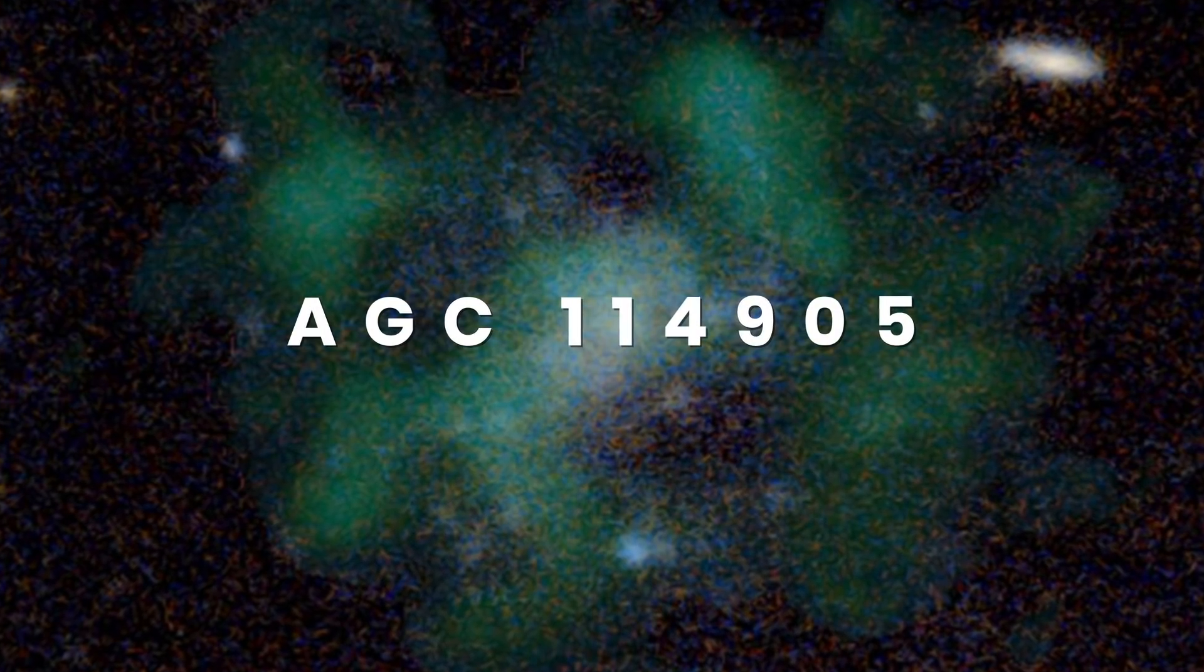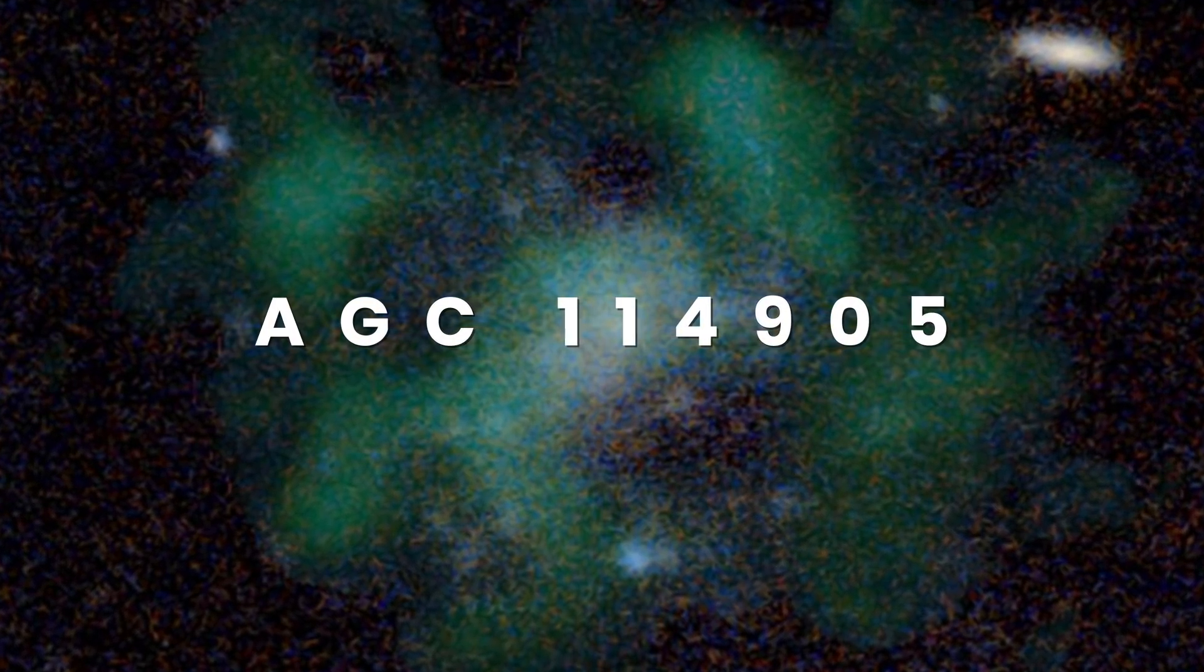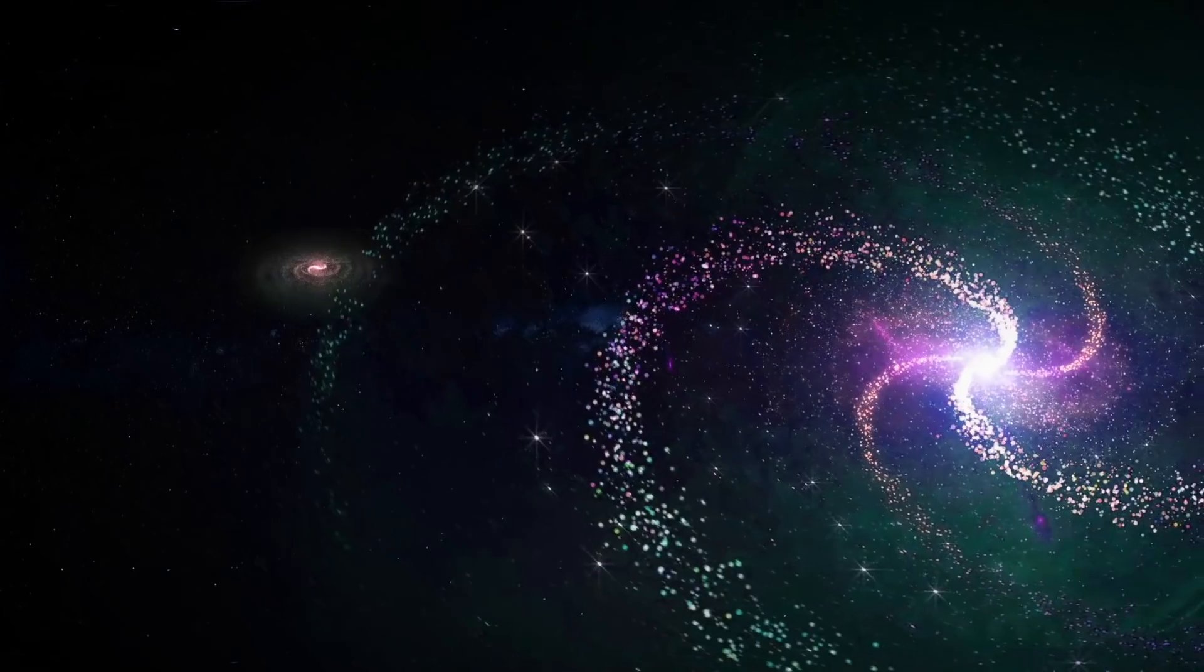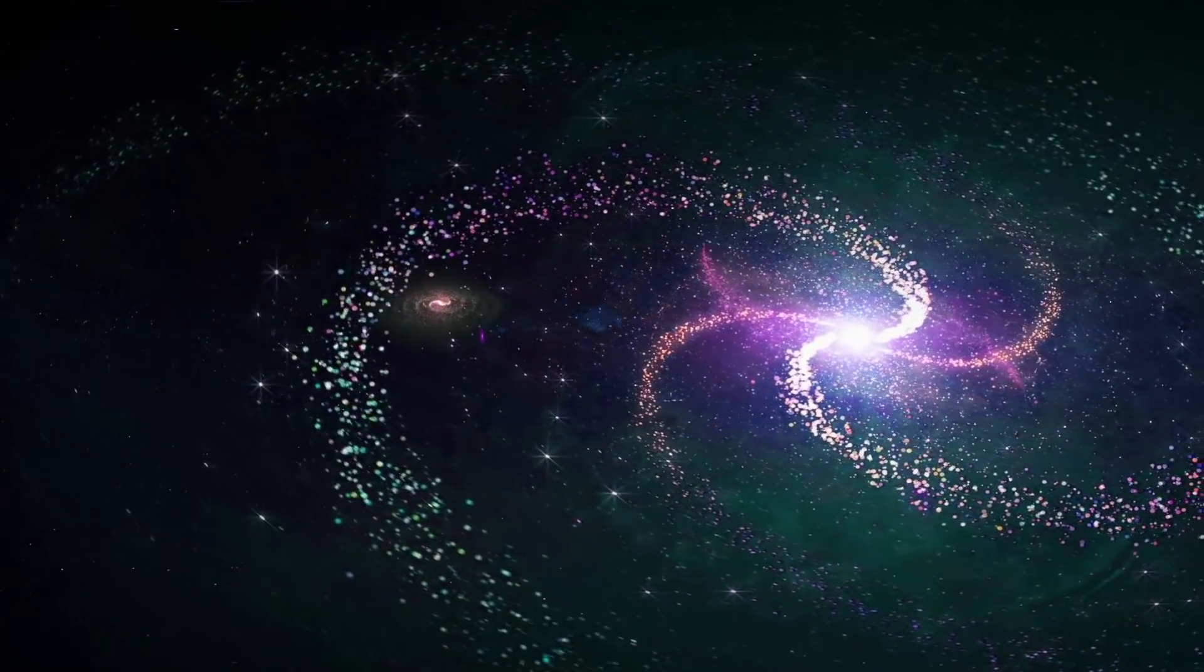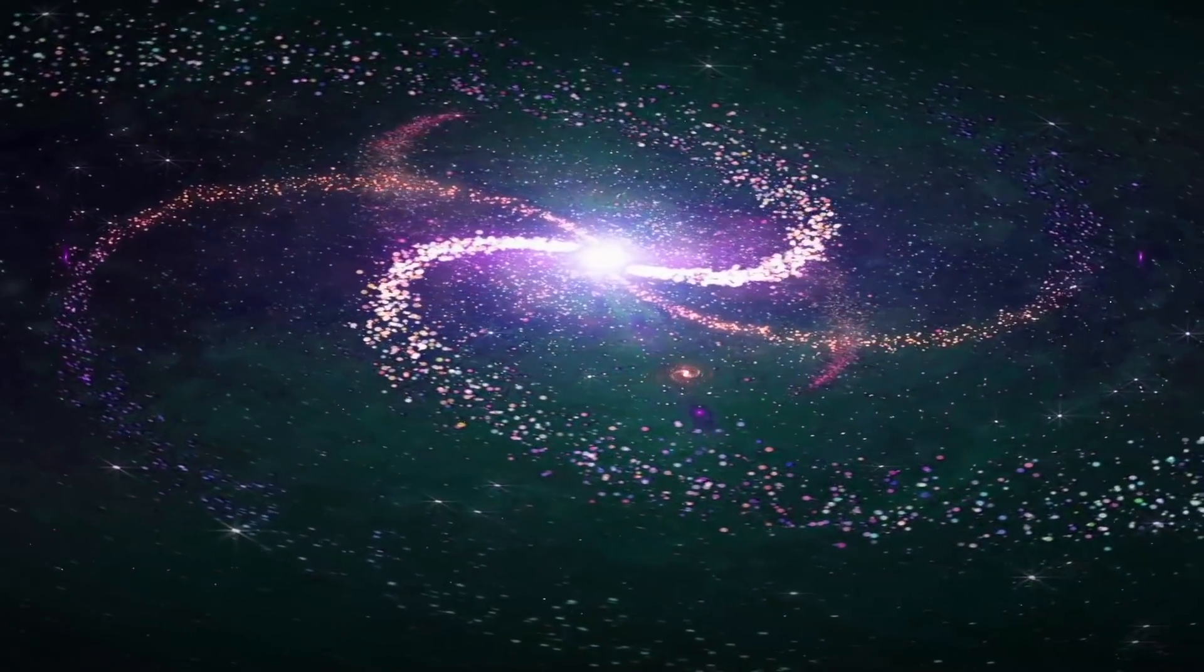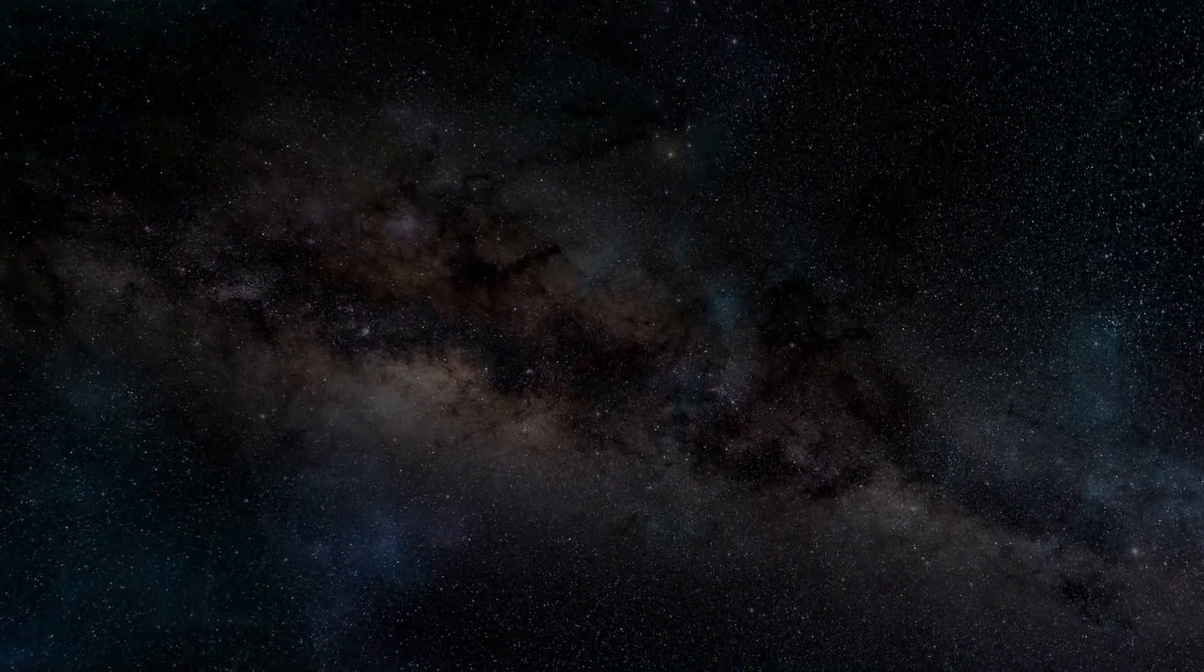However, the problem remains that theory predicts there must be dark matter in galaxy AGC 114905, but observations show it just isn't there. But there are some possible explanations for the lack of dark matter. One example is that the galaxy could have had its dark matter stripped away by another large nearby galaxy. The problem with this is there are no nearby galaxies.